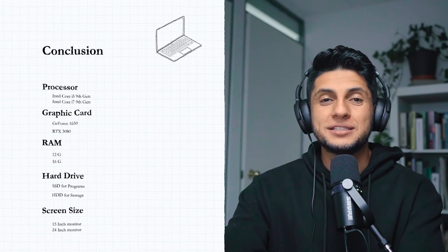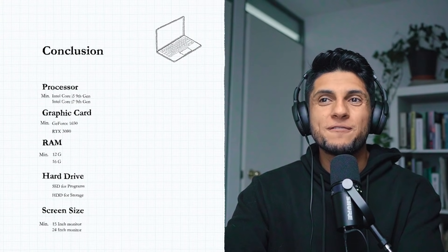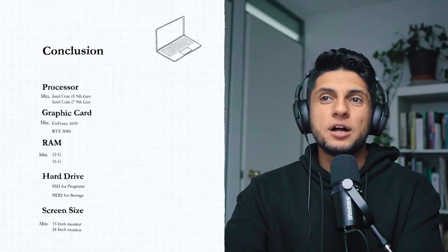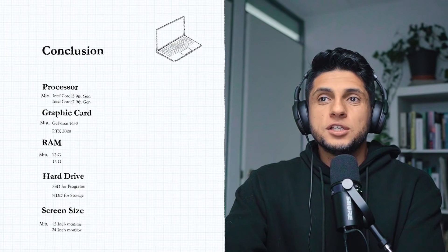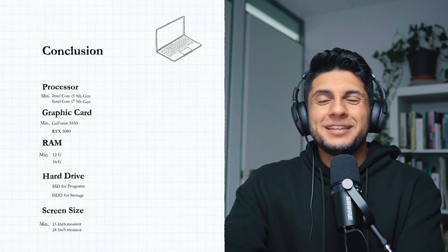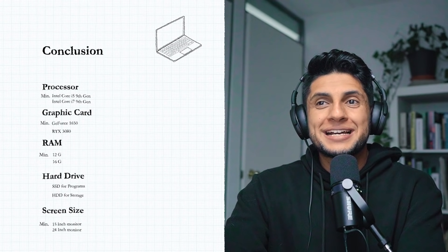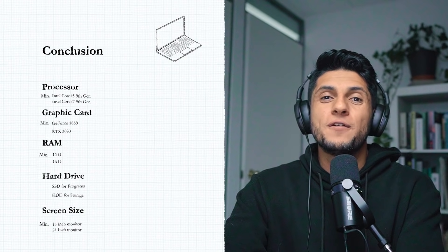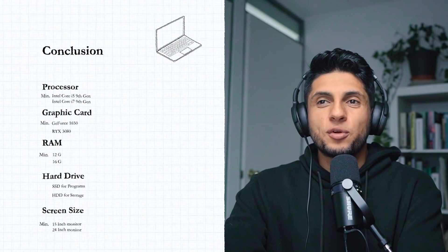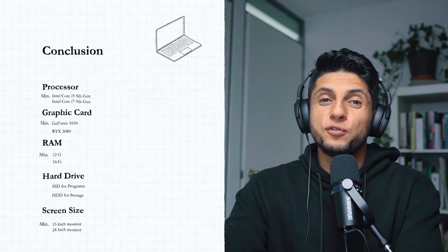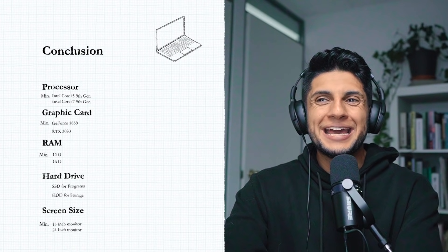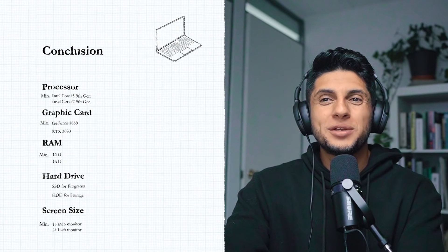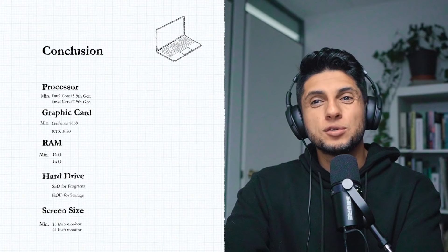So do you have your list ready? Let's recap the key points. For the processor: minimum Intel Core i5 9th generation or AMD equivalent; recommended is Intel Core i7 9th generation or AMD equivalent. For graphics card: minimum GeForce 1650, recommended RTX 3080 or higher, with minimum 8 gigs of VRAM. For RAM: minimum 12 gigs, but aim for 16 with upgrade slots. For hard drives: SSD for programs, HDD for file storage. For screen size: bigger is better, but watch your back — don't go too heavy or too small.